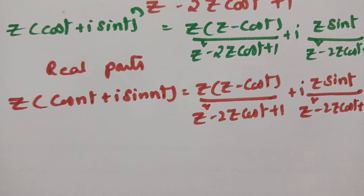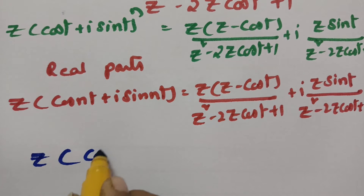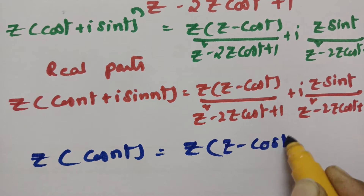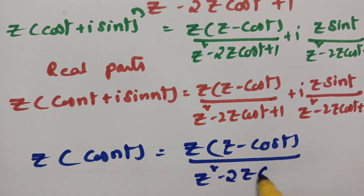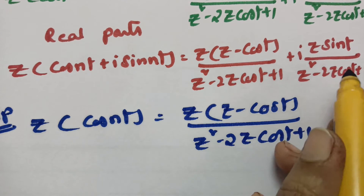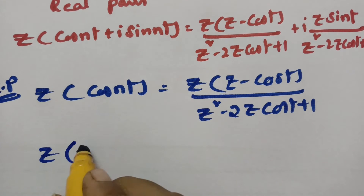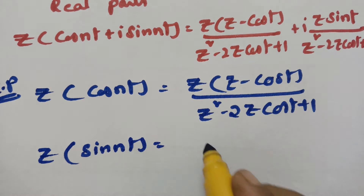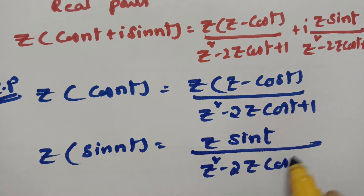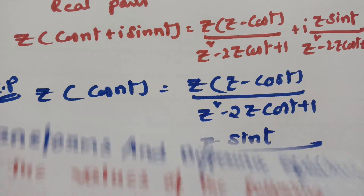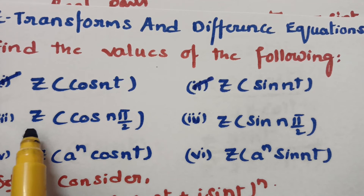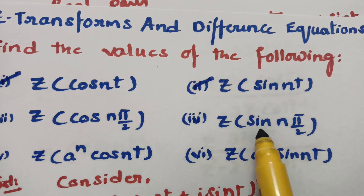Equating real parts on both sides: Z of cos(nt) = Z·(Z − cos(t)) / (Z² − 2Z·cos(t) + 1). Equating imaginary parts on both sides: Z of sin(nt) = Z·sin(t) / (Z² − 2Z·cos(t) + 1). So we have obtained both values.